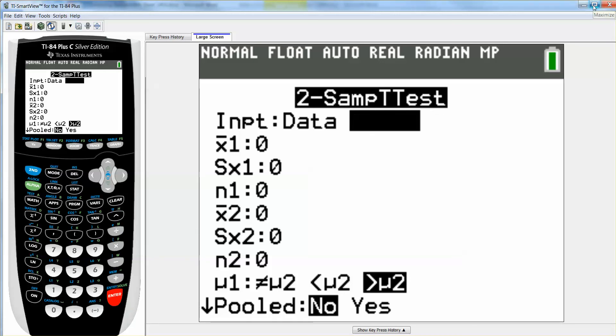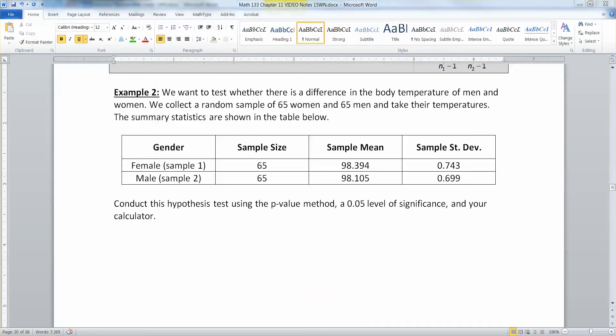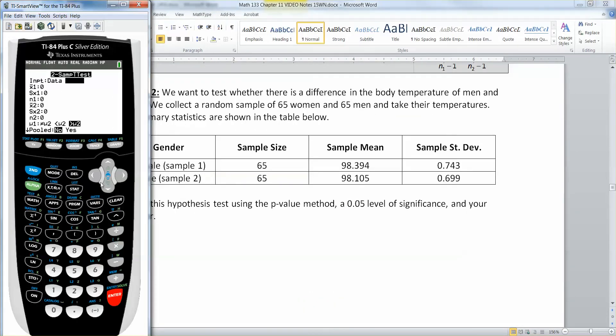We don't have any data on this one. There's no data information given to us. We do have statistics information. Data, if you remember, is a big column of data. We don't have that. What we have is these values, X₁, S₁, N₁. So let me make these smaller so we can see it. X-bar 1 is your sample mean, which is 98.394. S would be the standard deviation, which is 0.743. And sample size is 65.